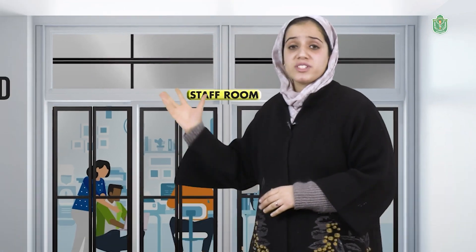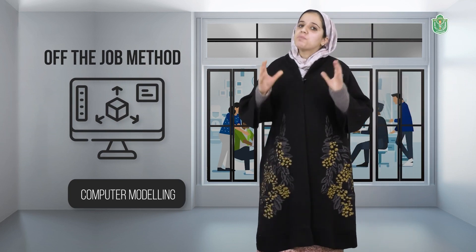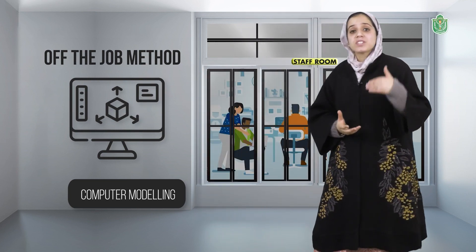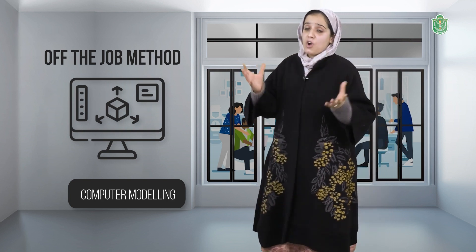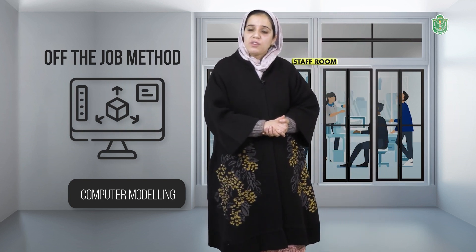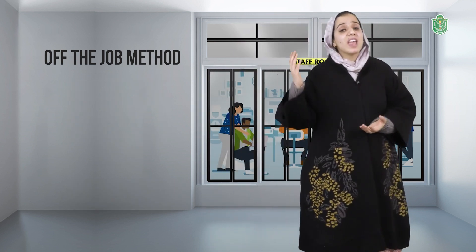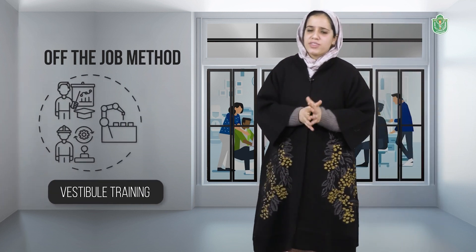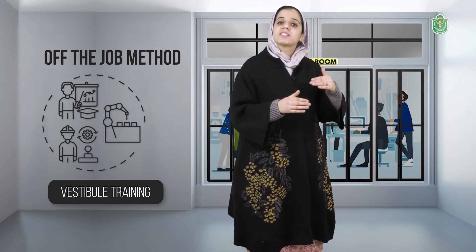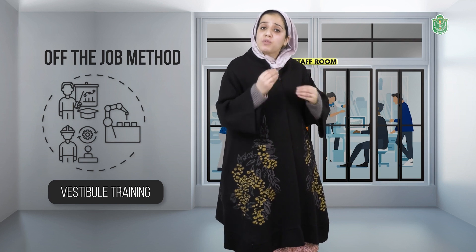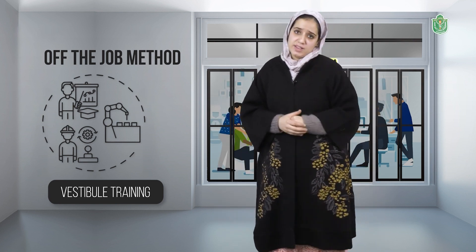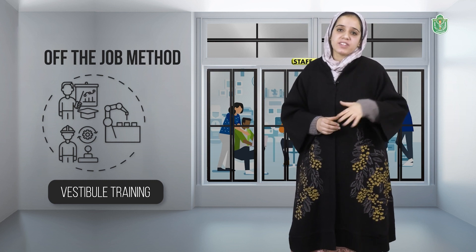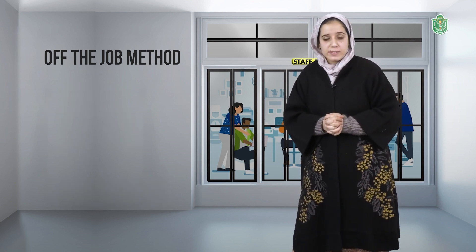The next is computer modelling. It simulates the work environment through programming a computer to imitate some of the realities of the job, and allows learning without the high risk or high cost that would be incurred if a mistake is made in a real-life situation. Then is vestibule training. In this method, the trainee is made to work on the equipment which they will be using in the real workplace and is given training to handle sophisticated and modern equipment and machines.